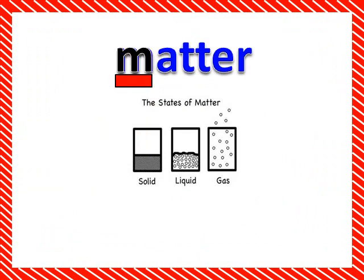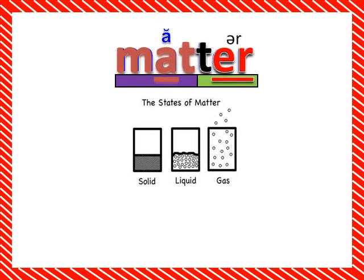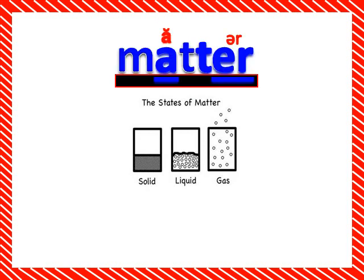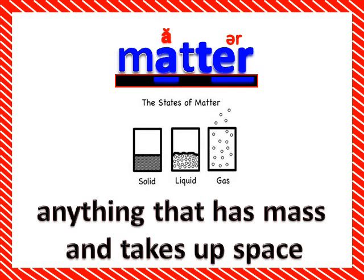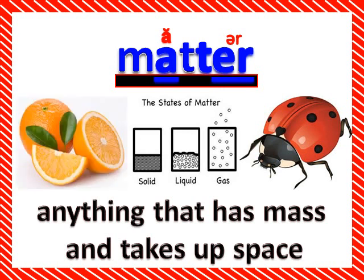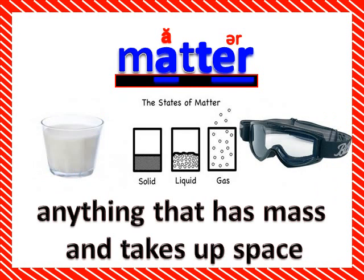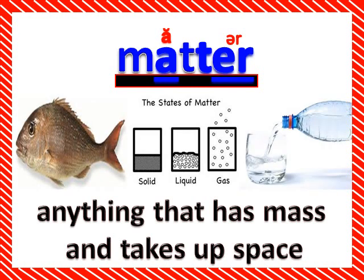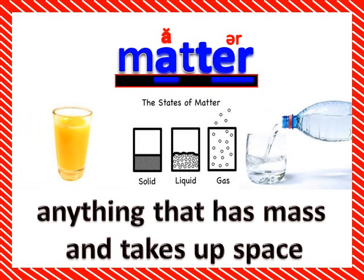Matter. Now, matter is anything that has mass and takes up space — like a grape, a fly, a brick, a ladybug, oranges, dirt, milk, goggles, a fish, water, orange juice. All of this stuff is matter, because it has mass. Matter can be a solid, matter can be a liquid, and matter can be a gas.